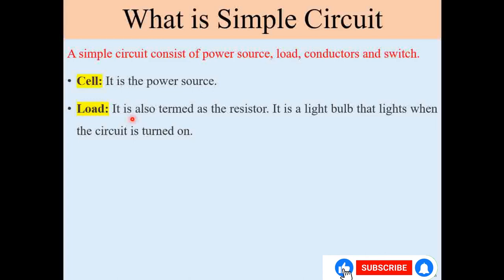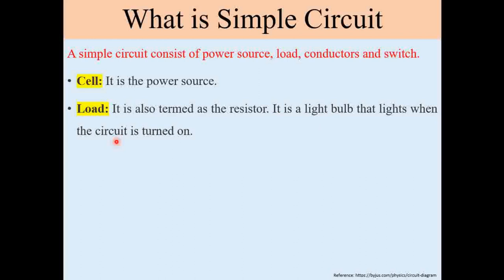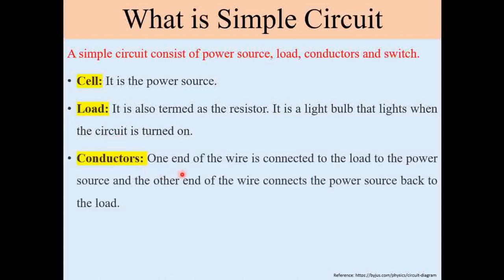The load is also termed as a resistor connected in the loop, or it can be a light bulb that lights when the circuit is turned on. The conductors are the wires connecting the power source to the load. One end of the wire is connected from the positive terminal of the source through the load, and the other end connects back to the negative terminal of the source.